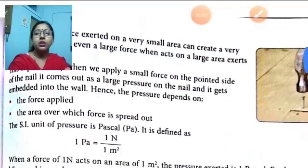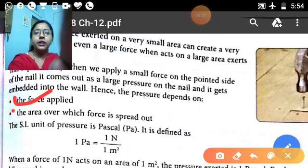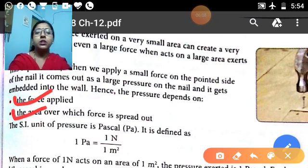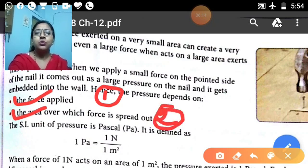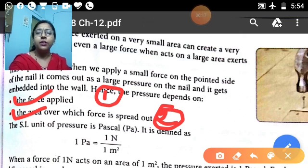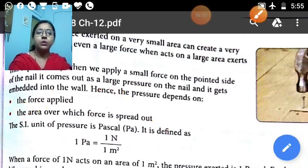Hence pressure depends on two factors: number one, the force applied, and number two, the area over which the force is spread out.